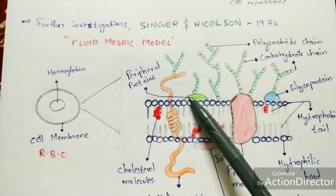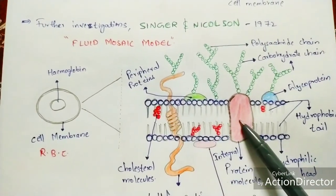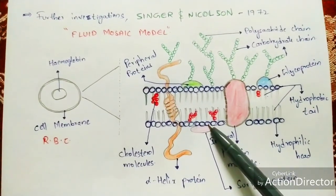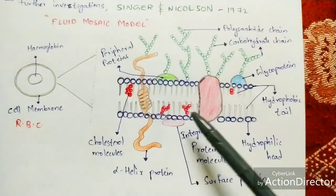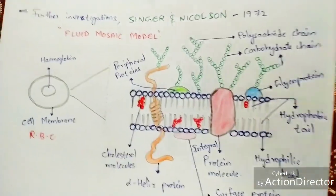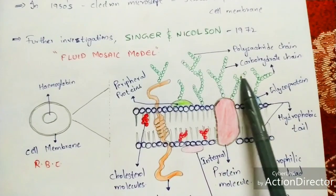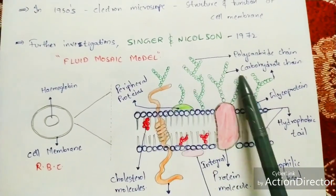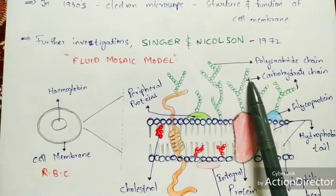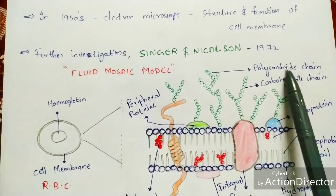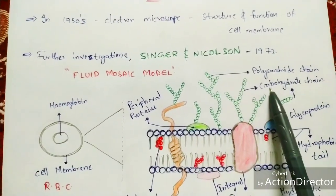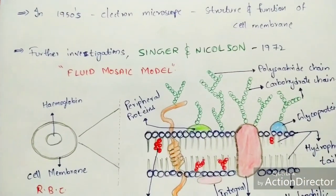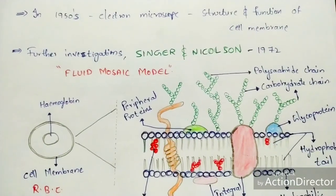The membrane consists of glycoprotein, peripheral protein, integral protein, and surface protein — peripheral proteins and surface proteins are the same. There are cholesterol molecules present inside the lipid bilayer. The green structures indicated in the diagram are called carbohydrate chains — specifically polysaccharide chains, which fall under the classification of carbohydrates along with monosaccharide, disaccharide, and oligosaccharide.